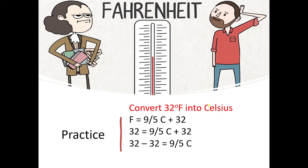So 32 minus 32 equals zero, meaning 32 Fahrenheit is equal to 0 degrees Celsius. You can solve many questions using this formula.